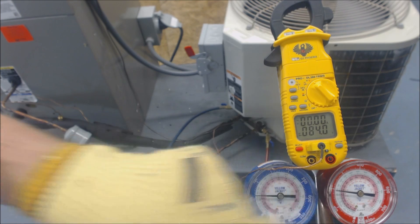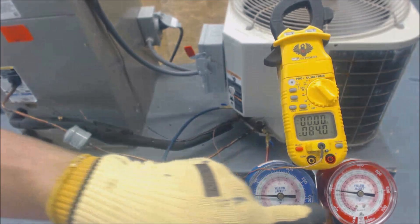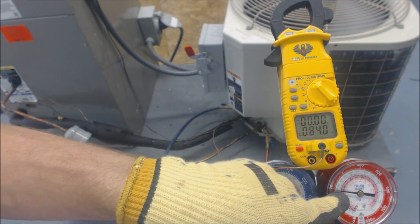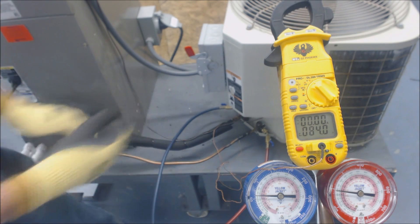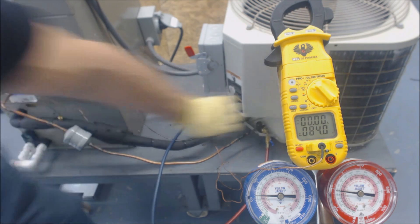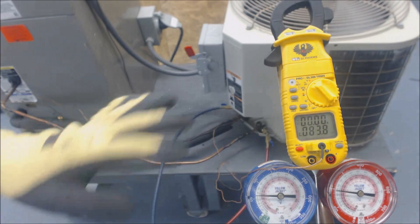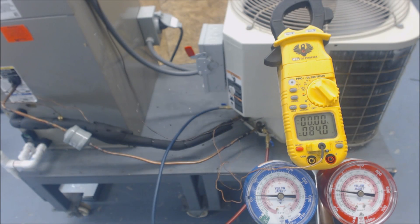For R22, you bring the dial in from 192 PSI and you follow it over to the green saturated temperature. The saturated temperature is the temperature right here in the middle of the condenser coil. We've got 99 minus 84, so that's 15 degrees of subcooling. That's telling us we have the correct charge.